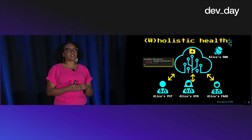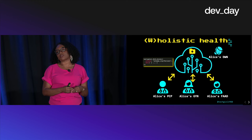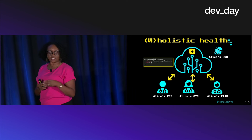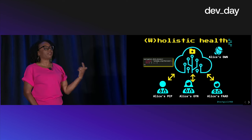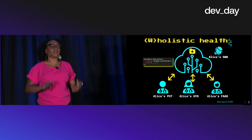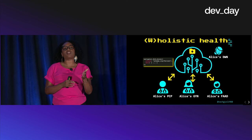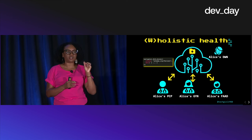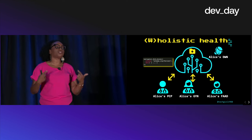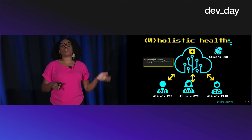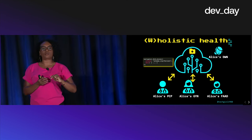Medical records are another example dear to me. I've moved states three times in the last five years, which means every time I move I have to get a new set of doctors. With Web 5, Alice has given each of her doctors — primary care, gynecologist, dentist — read and write access to the patient records in her decentralized web node. They can write those records there. Because they're all using decentralized identifiers, any of these doctors can see who has written a record and verify it's a reputable source.